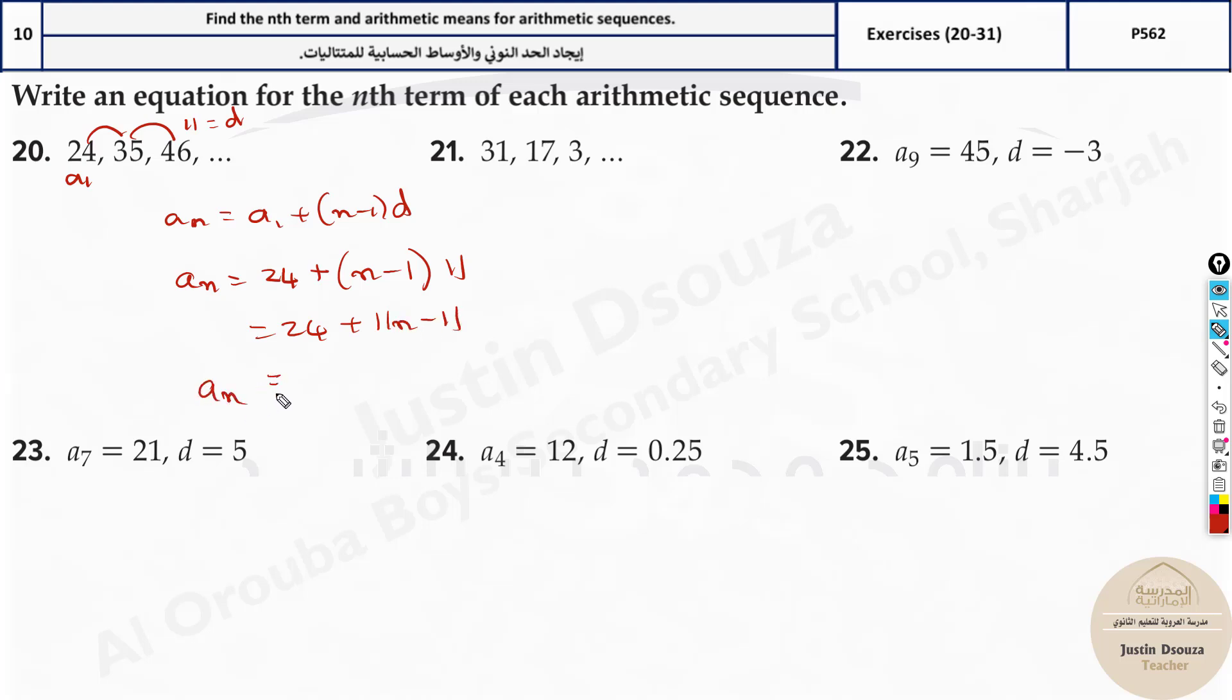Finally a_n will be, you can write this variable term first, 11n plus 24 minus 11 will be 13. So this is the nth term formula. Now once you have this formula, you can find any number of terms. The means are already given, you have just found out the term. You can see that's the answer.